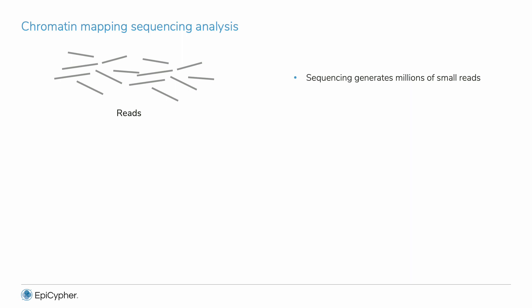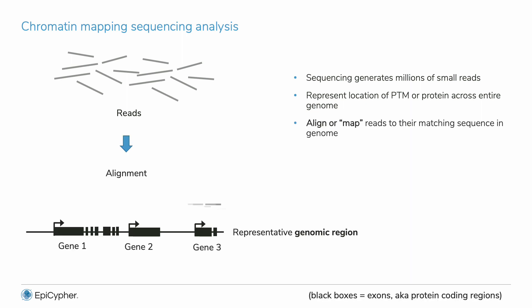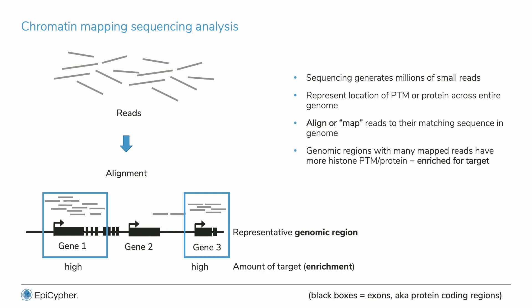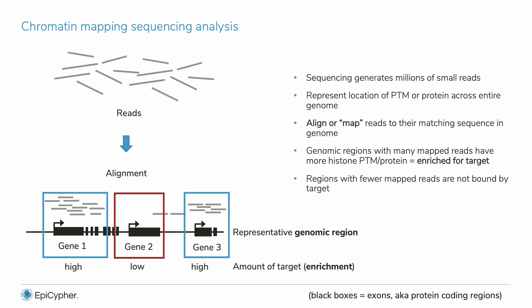Sequencing produces millions of short reads, and these reads correspond to where your target is located across the genome. Scientists next align or map these reads to the matching sequence in the genome — sequences are mapped genome-wide. Mapping the reads allows you to know the amount of target at each location in the genome. This is called enrichment. Areas with many aligned reads have high enrichment, while areas with few aligned reads have low enrichment.